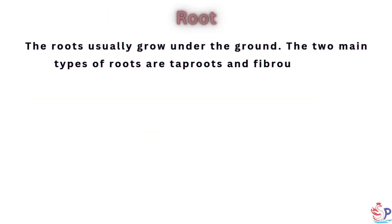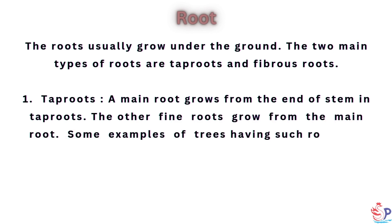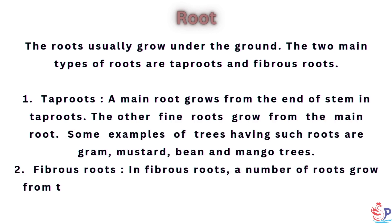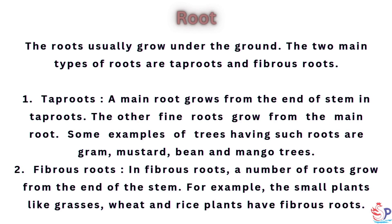The roots usually grow under the ground. The two main types of roots are tap roots and fibrous roots. In tap roots, a main root grows from the end of the stem, and other fine roots grow from the main root. Examples include gram, mustard, bean and mango trees. In fibrous roots, a number of roots grow from the end of the stem. Small plants like grasses, wheat and rice plants have fibrous roots.